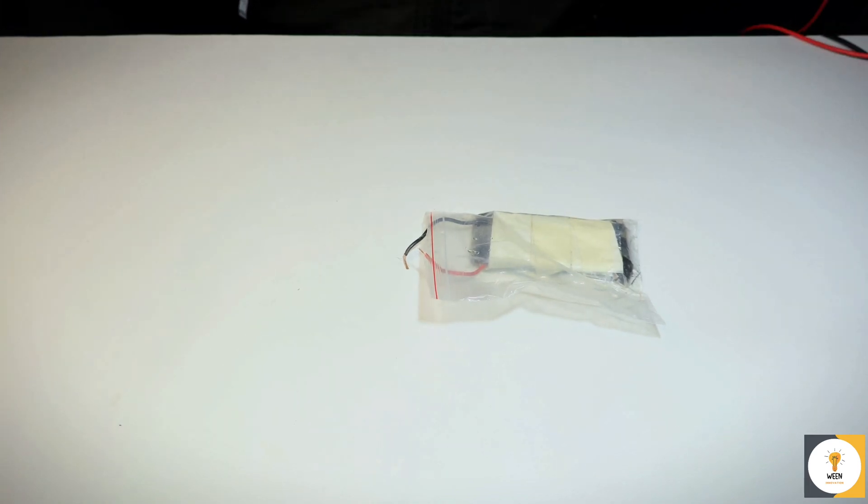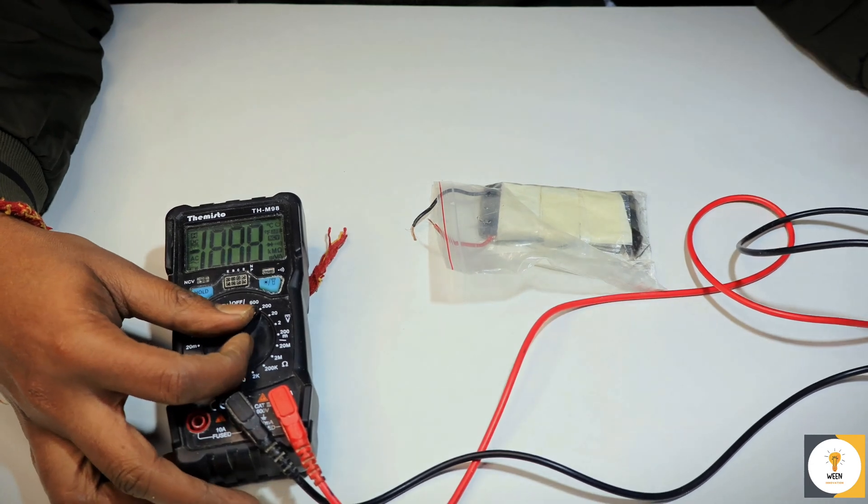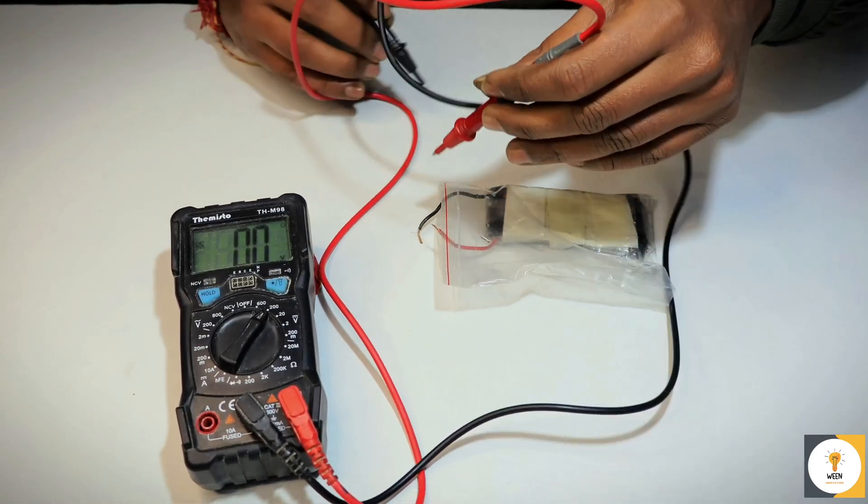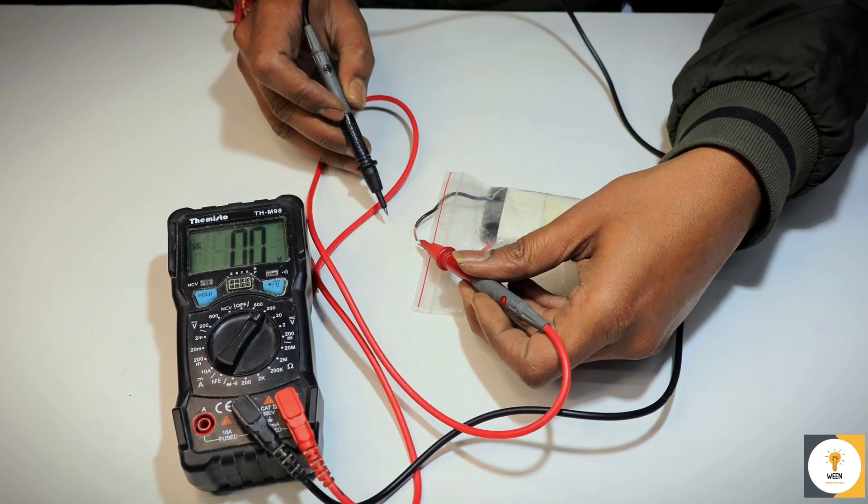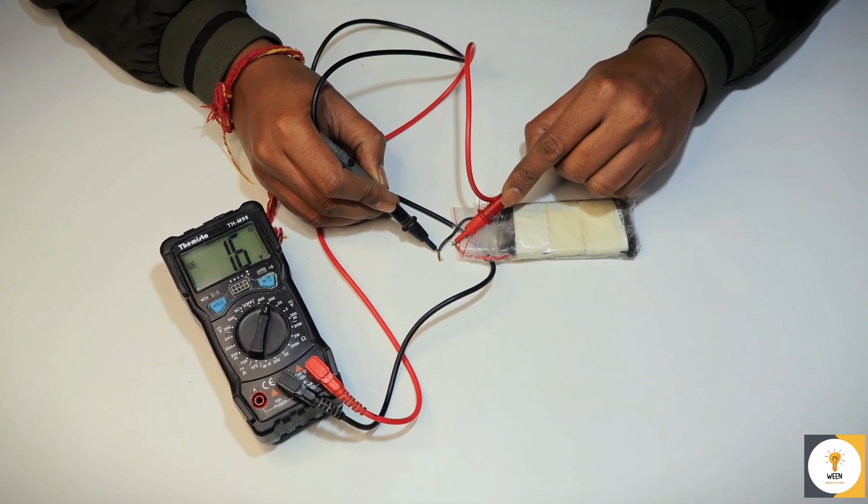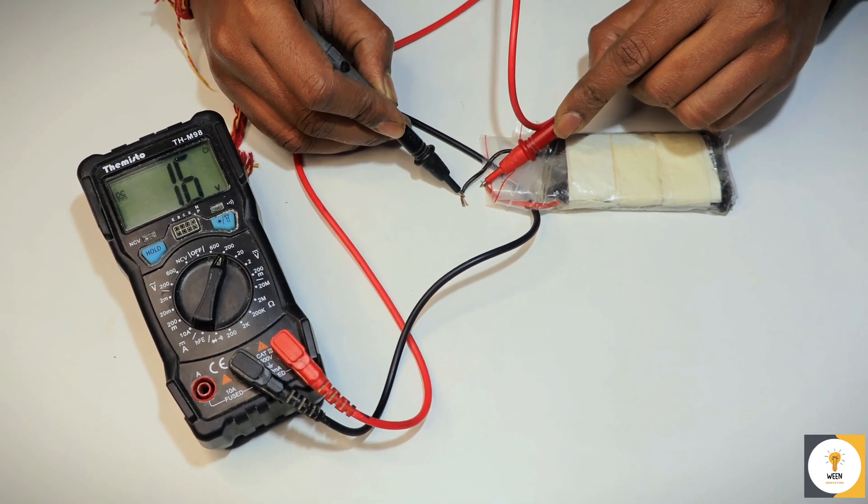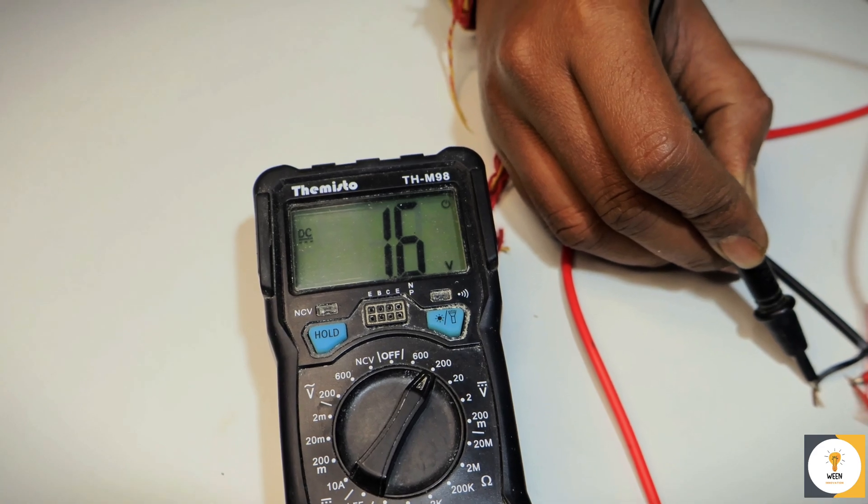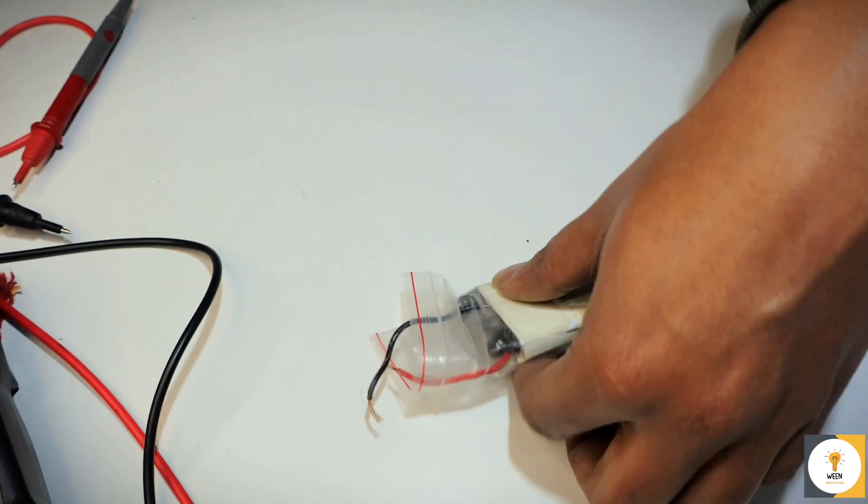Now we will test our battery. Check its output with a multimeter. It's generating 1.6 volts.